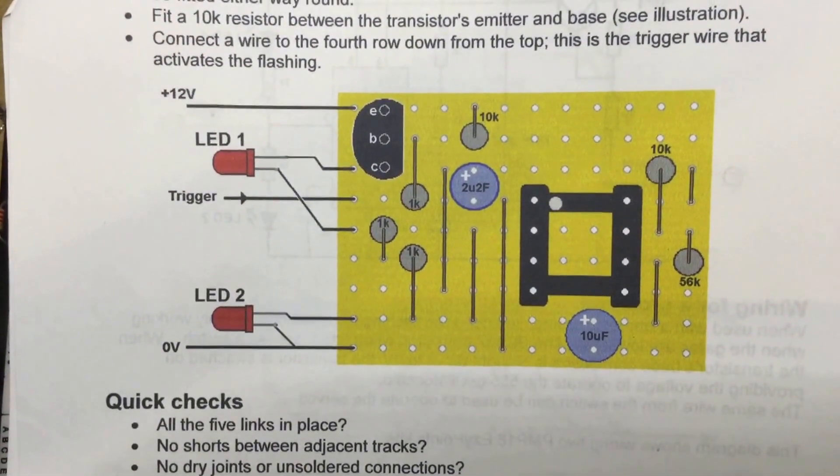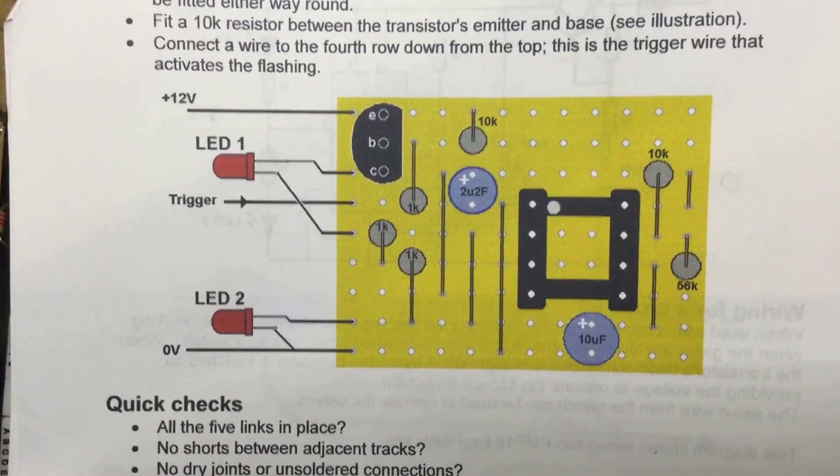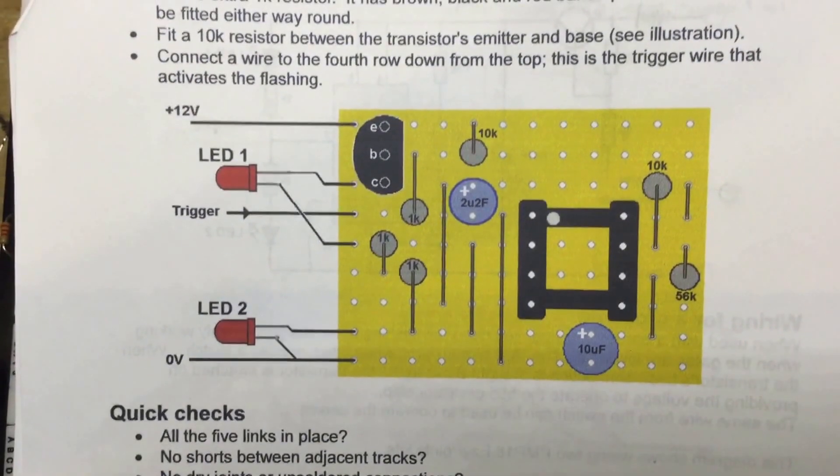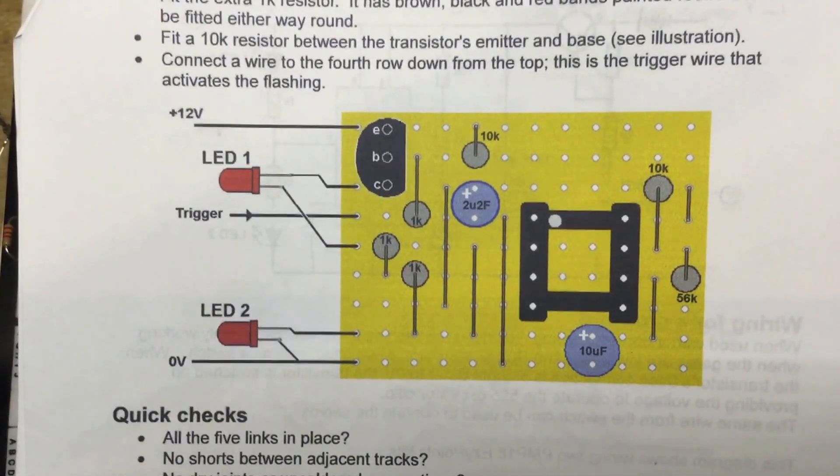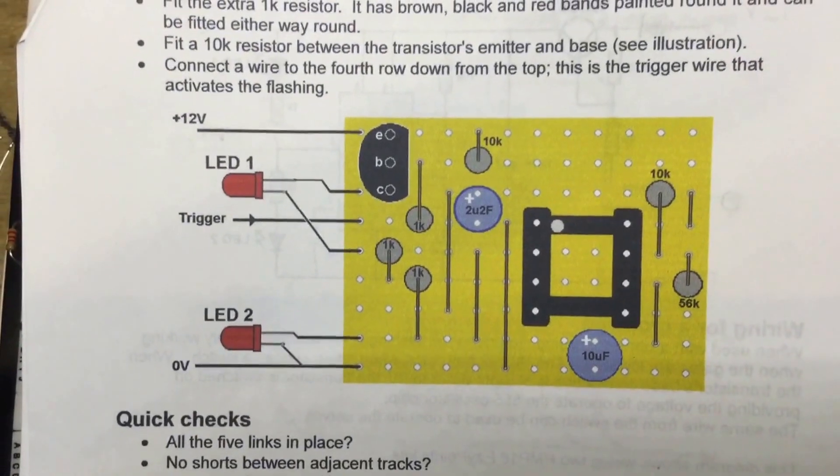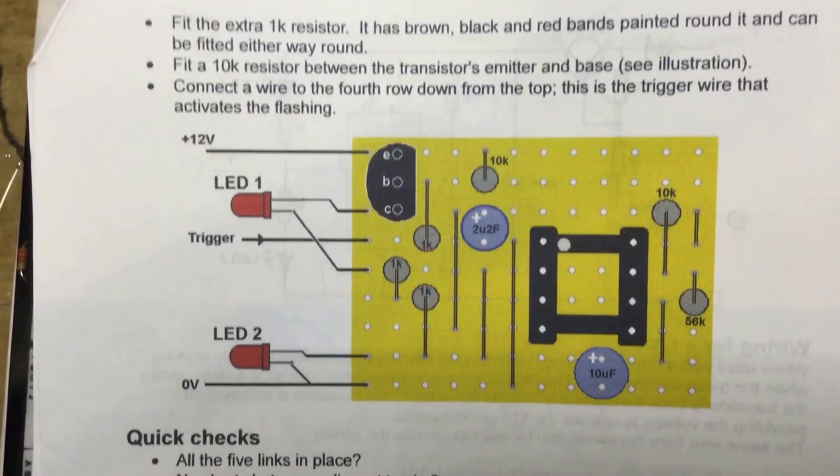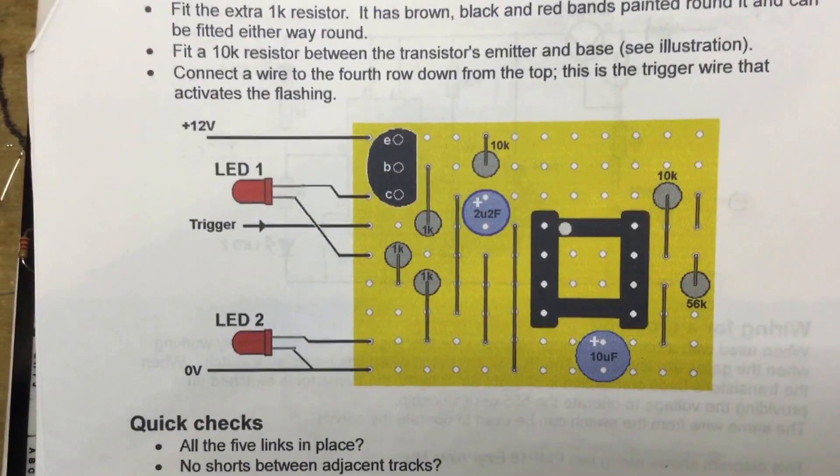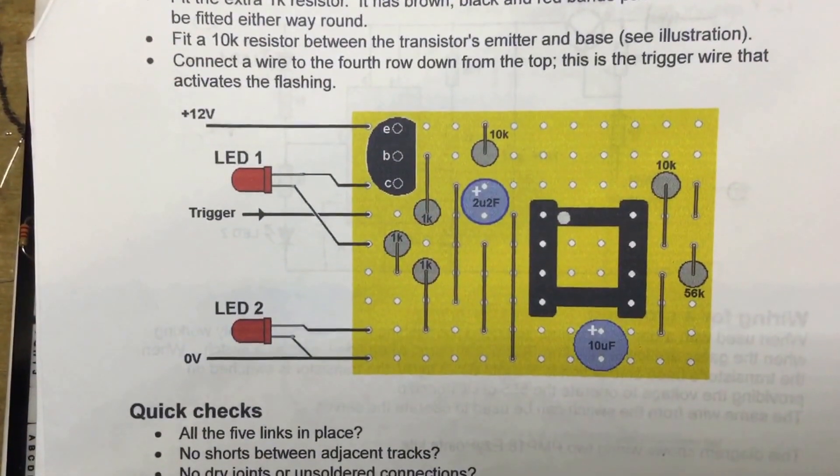When the trigger line is taken to ground, it turns the circuit on and the two LEDs flash alternately. So it's meant for level crossing applications, but there's a couple of things that make this really useful.